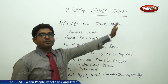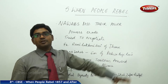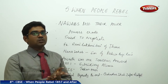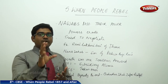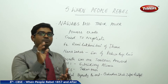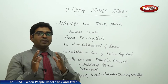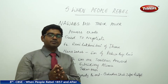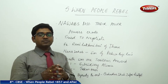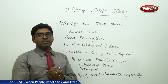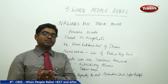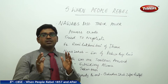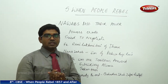Chapter 5: When People Rebel. What happened when the strict laws of the Britishers were implemented on the Indian population? How did the Indian kings, Indian Rajputs, and Indian princes fight against them? How did the soldiers react? All these things will be discussed in this unit.